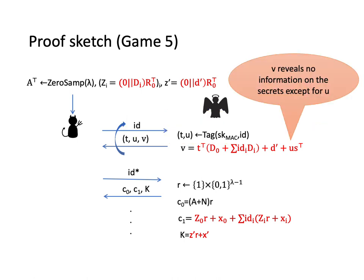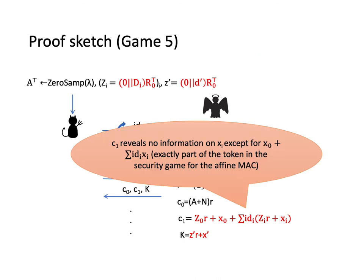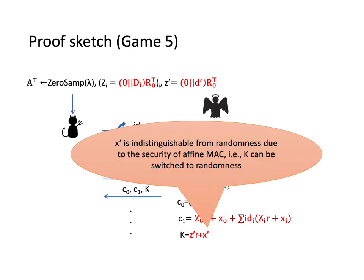Now we can prove that V reveals no information on the secret except for U which is a tag of the affine MAC. Also, we can prove that C₁ reveals no information on Xᵢ except for X₀ plus the sum of IDᵢXᵢ. This is exactly part of the token in the security game for the affine MAC. This allows us to make use of the security of affine MAC to show that X' which is another part of the token is indistinguishable from randomness, which means that the session key K can be switched to randomness.